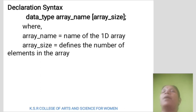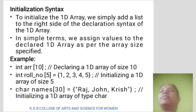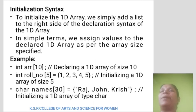Declaration syntax: data_type array_name[array_size], where array_name is the name of the 1D array, and array_size defines the number of elements in the array. Initialization syntax: to initialize the 1D array, we simply add a list to the right side of the declaration syntax of the 1D array. We assign the value to the declared 1D array as per the array size specification. Example: int array[10], int roll_number[10], char name[30].